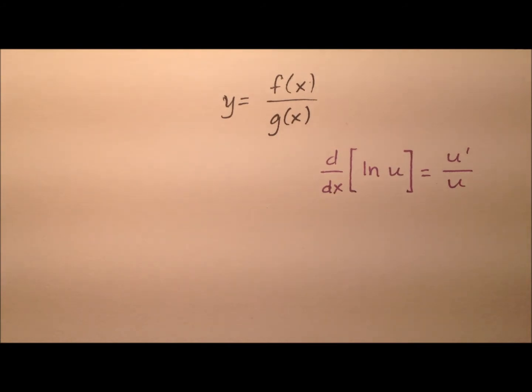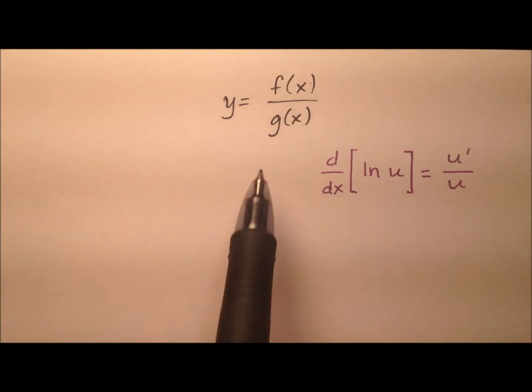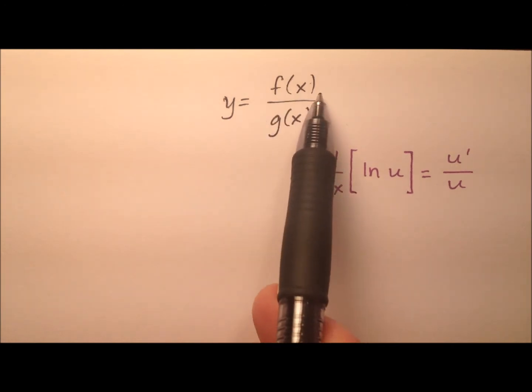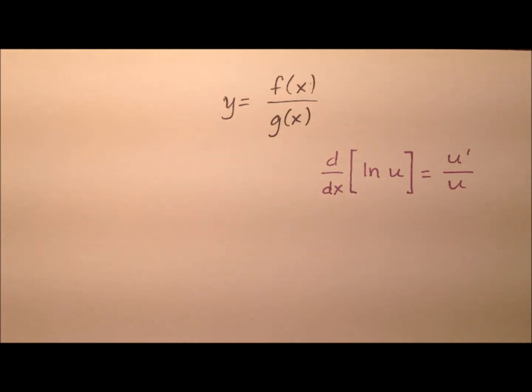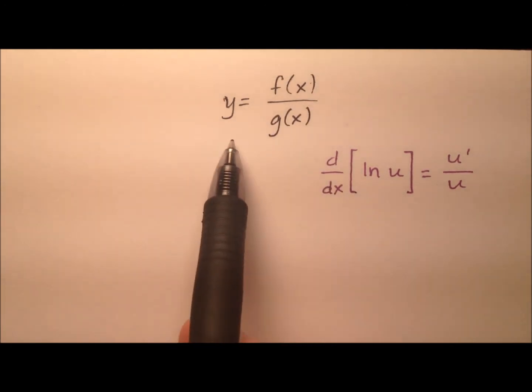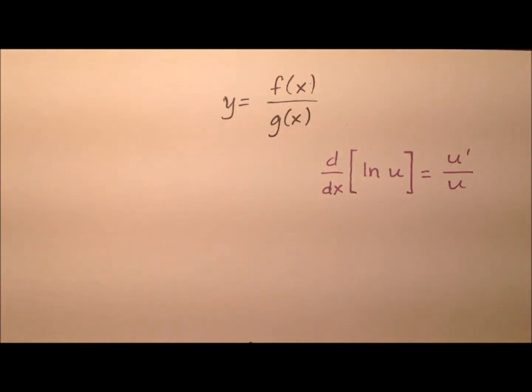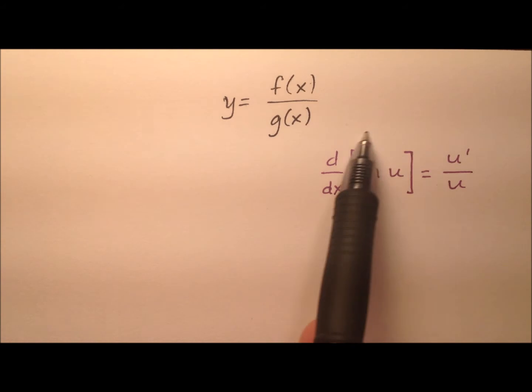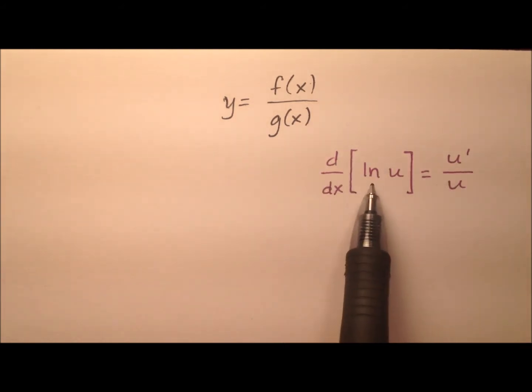In this video, I want to show you how we can use logarithmic differentiation to derive the quotient rule that we see in calculus to find the derivative of a function that is composed of two other functions that are being divided by one another. So we're going to start with this equation y equals f of x divided by g of x, and I also have this derivative rule over here for the natural log that we're going to employ as well.